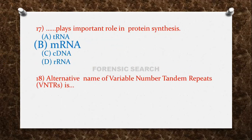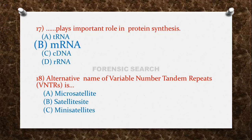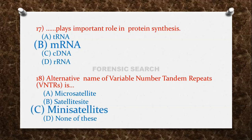The next question: the alternative name of Variable Number Tandem Repeats (VNTRs) is — Option A: microsatellite. Option B: satellites. Option C: minisatellites. Option D: none of these. The correct answer is option C — VNTRs are known as minisatellites.